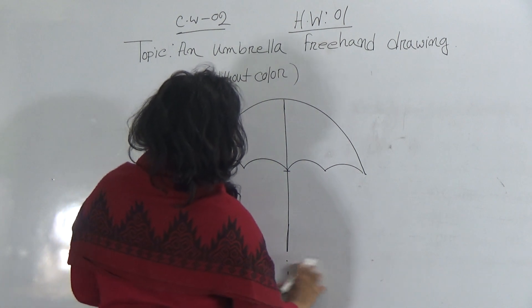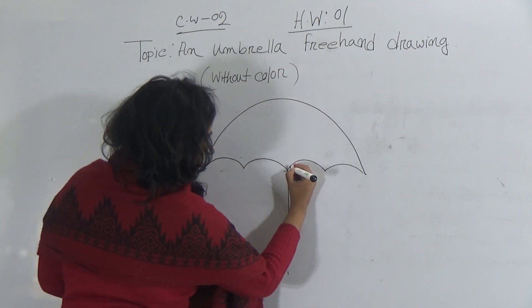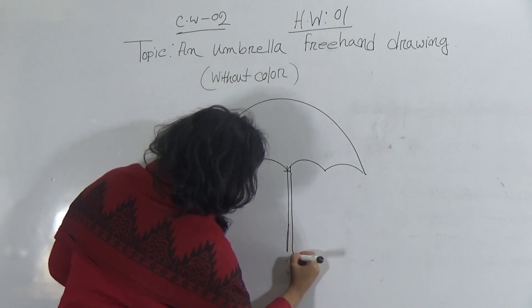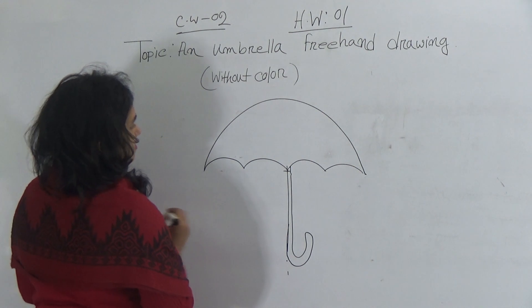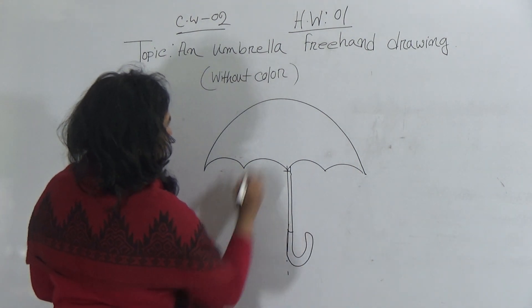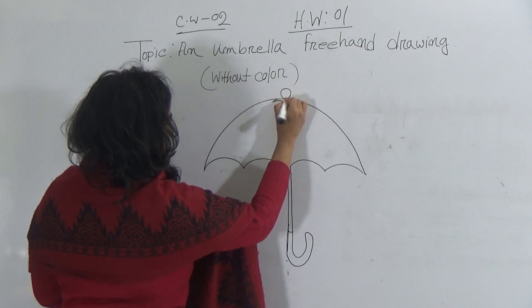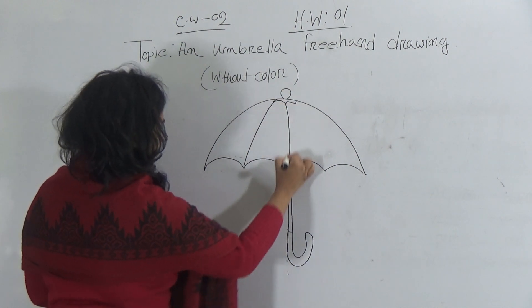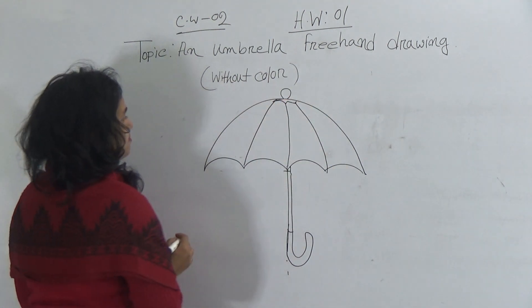After that, you erase these lines also. Then here you use double line and give this handle. And here you use a line for finishing. Use this type of things. Draw this lines, this lines and this line. It makes an umbrella.